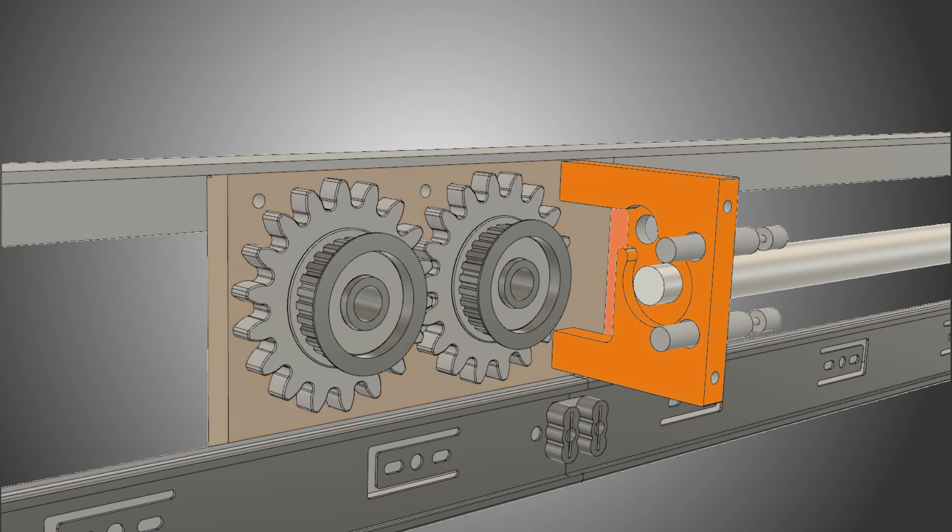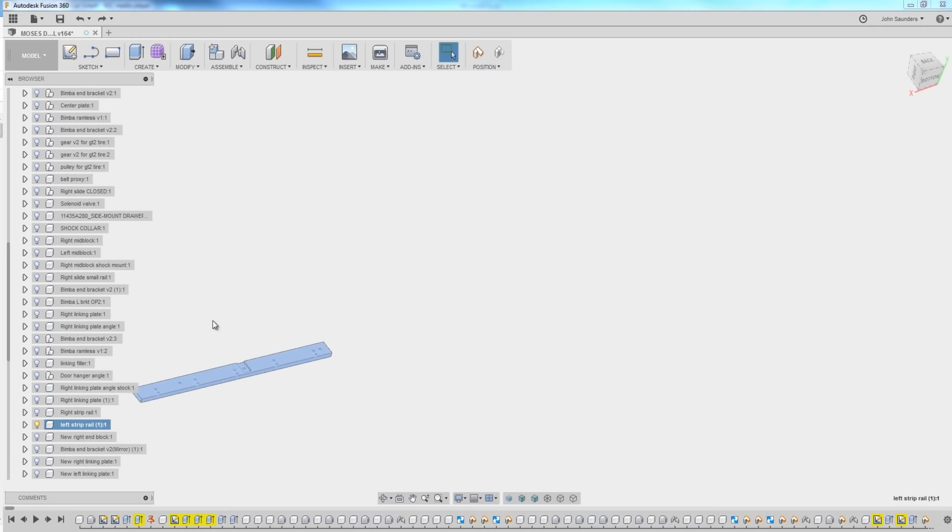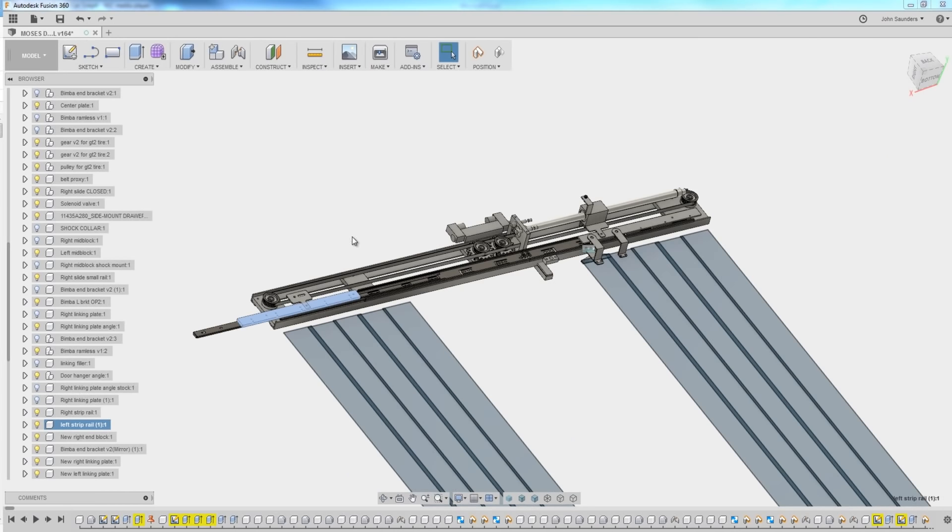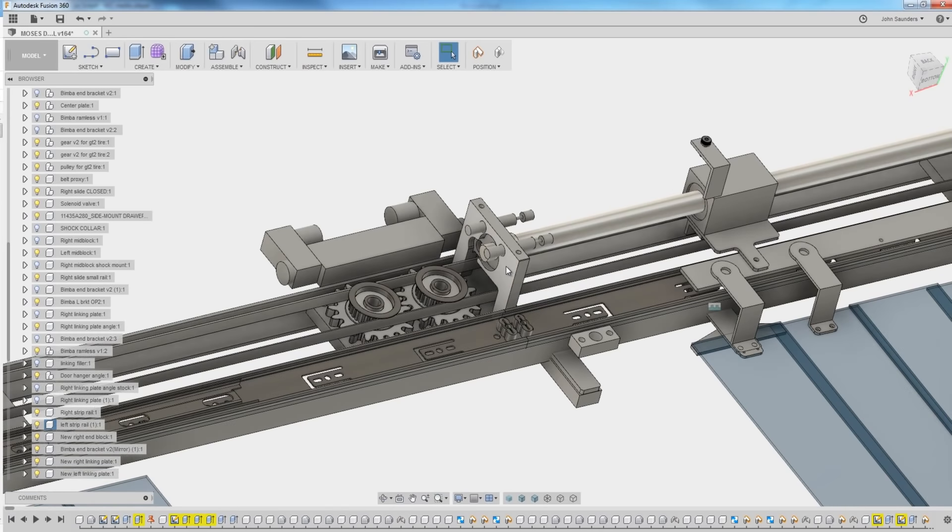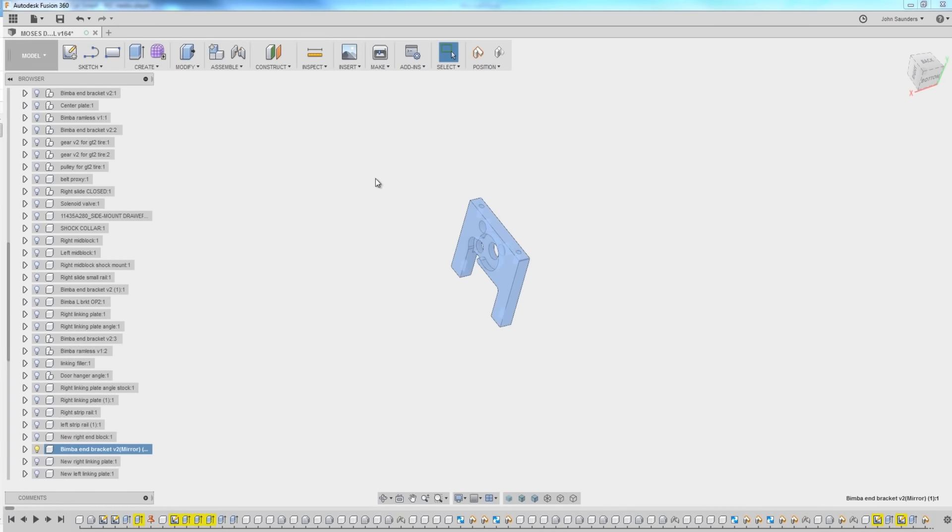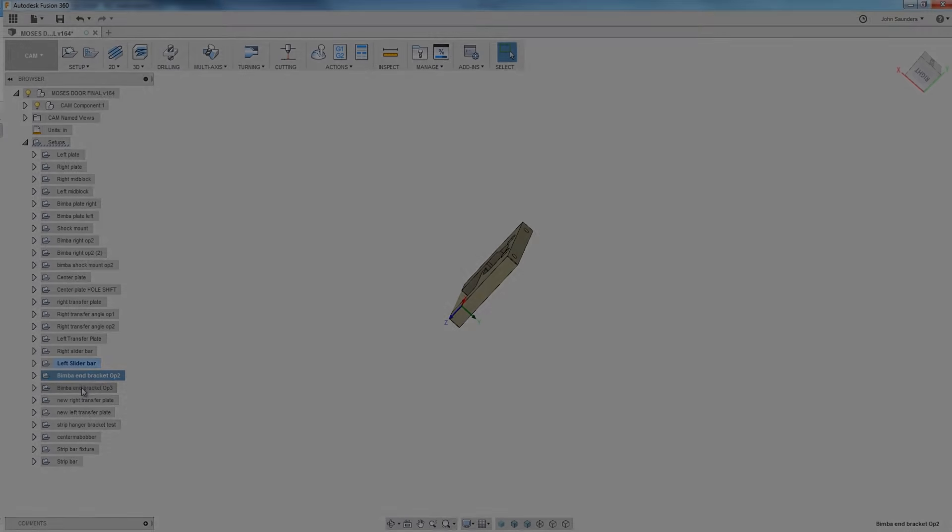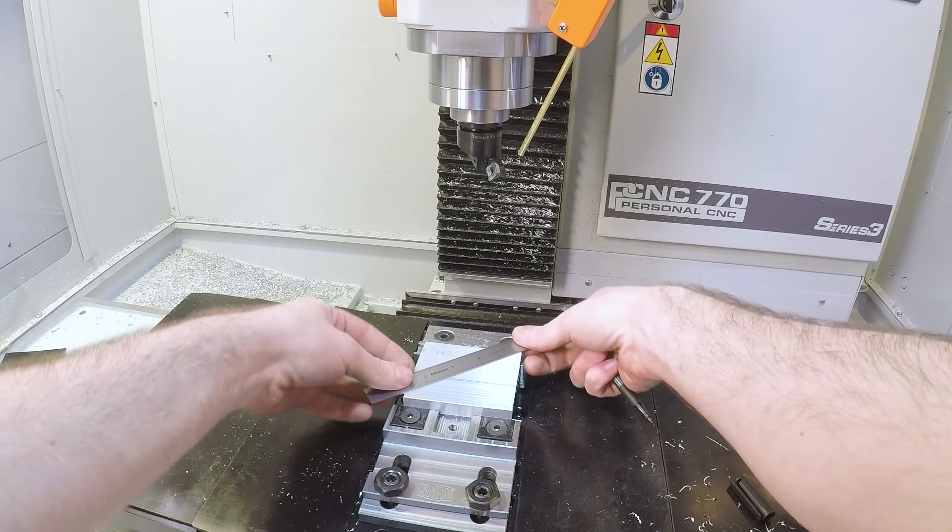Next up, the Bimba end bracket. I will right click on the left strip rail, choose unisolate. That brings everything back. And I'll click on this bracket once. I can see that's what got highlighted. I'll right click, isolate that. And I wish we had that same functionality here in CAM. I wish you could click on the part and have any CAM operation that uses that body show up. We don't have that just yet though, unfortunately.